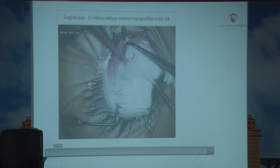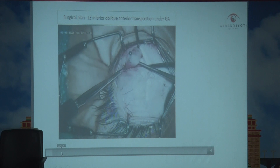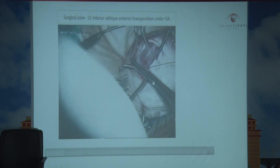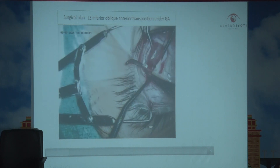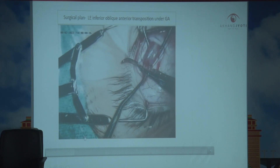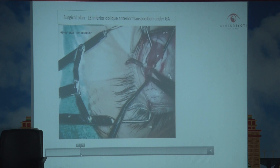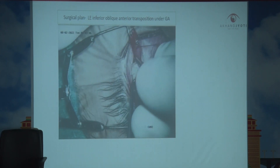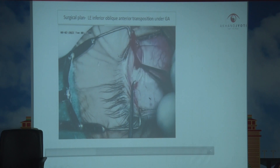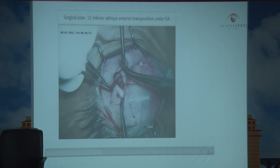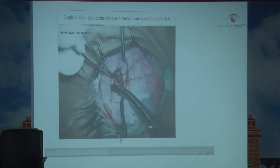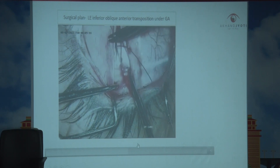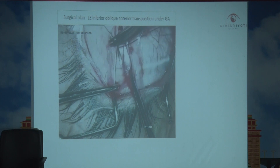During surgery, this is the inferior oblique muscle we isolated, and this is the bifid head we found. We disinserted the muscle and sutured both heads together. This is the first head and this is the second head. We inserted both of them together and placed it lateral temporal to the inferior rectus muscle.